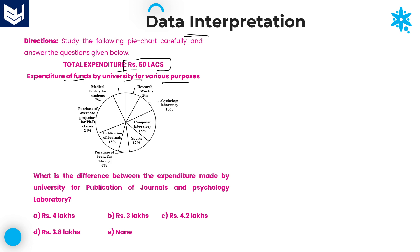The first one is research work: 8%. Psychology laboratory: 10%. Computer laboratory: 18%. Sports: 12%. Purchase of books for library: 6%. Publication of journals: 15%. Purchase of overhead projectors for PhD classes: 24%. And medical facility for students: 7%.